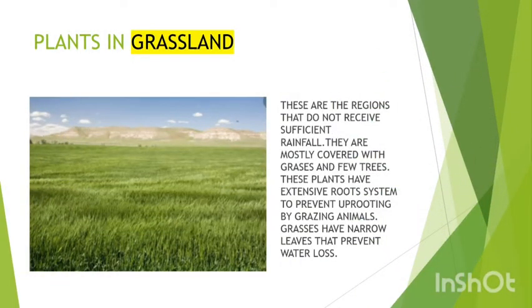Plants in grassland. These are the regions that do not receive sufficient rainfall. They are mostly covered with grasses and fruit trees. These plants have an extensive root system to prevent uprooting by grazing animals. Grasses have narrow leaves that prevent water loss.